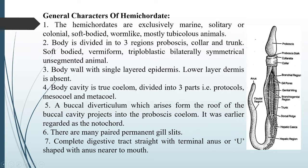These animals are soft-bodied, worm-like, triploblastic, and the body is bilaterally symmetrical — it can be cut into two equal halves. The body is without segmentation; it is not segmented. The body wall has a single-layered epidermis only. The lower layer, dermis — present in mammals — is absent in Hemichordata.